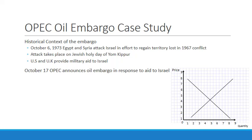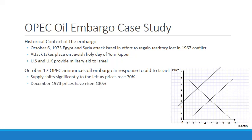Looking at this from a supply and demand perspective: the embargo represents a change — a shift in supply. Supply shifts to the left, causing equilibrium price to increase. Supply shifts significantly to the left as prices rose 70%. By December of 1973, prices had risen 130% — a significant increase. The supply of oil also decreased as a result of this leftward shift.